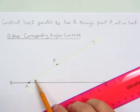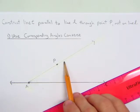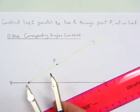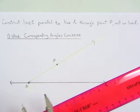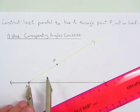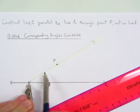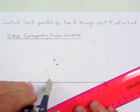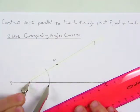We need to copy the angle here up to here. So what we do is we put the point of our compass on point A. We can open the compass to any measure. We go ahead and draw an arc that will intersect both of these lines here.